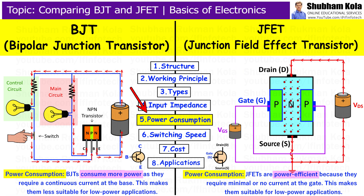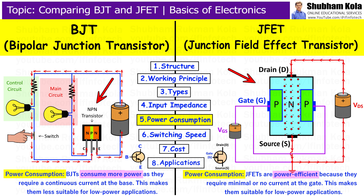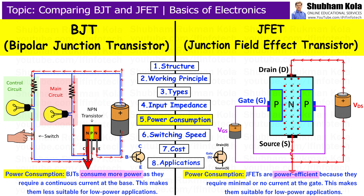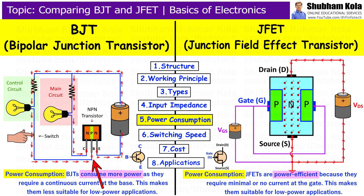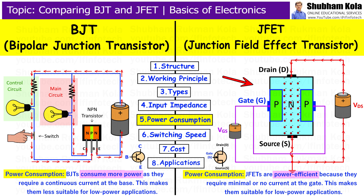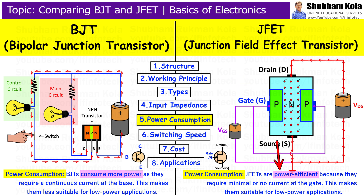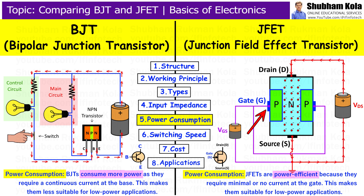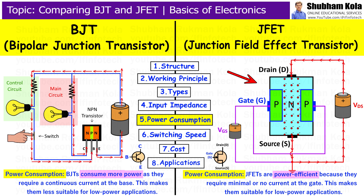Next is Power Consumption. The power consumption of these two devices is also different. BJT generally consumes more power because it requires a continuous current at the base to function. JFET is more power efficient because it is a voltage-controlled device and does not require continuous current at the gate. This makes JFETs ideal for low power applications.